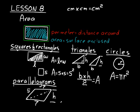A trapezoid can also be split diagonally into two triangles, but unlike a parallelogram the two triangles have different bases — call them B1 and B2. So each triangle must be calculated independently, using the same perpendicular height. You figure out the area of each triangle separately and add them together to get the total area of the trapezoid.